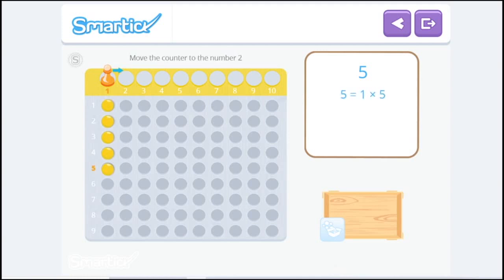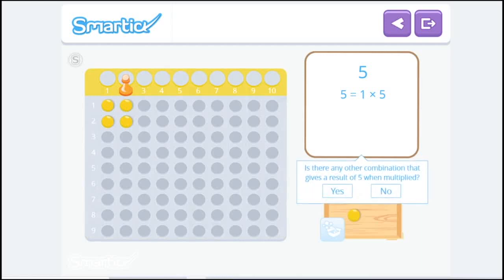Let's try and divide 5 by 2. Move the counter to the number 2. Okay, let's try. Let's move the counter. Oops! There's one left over. Is there any other combination of numbers that gives a result of 5 when multiplied?